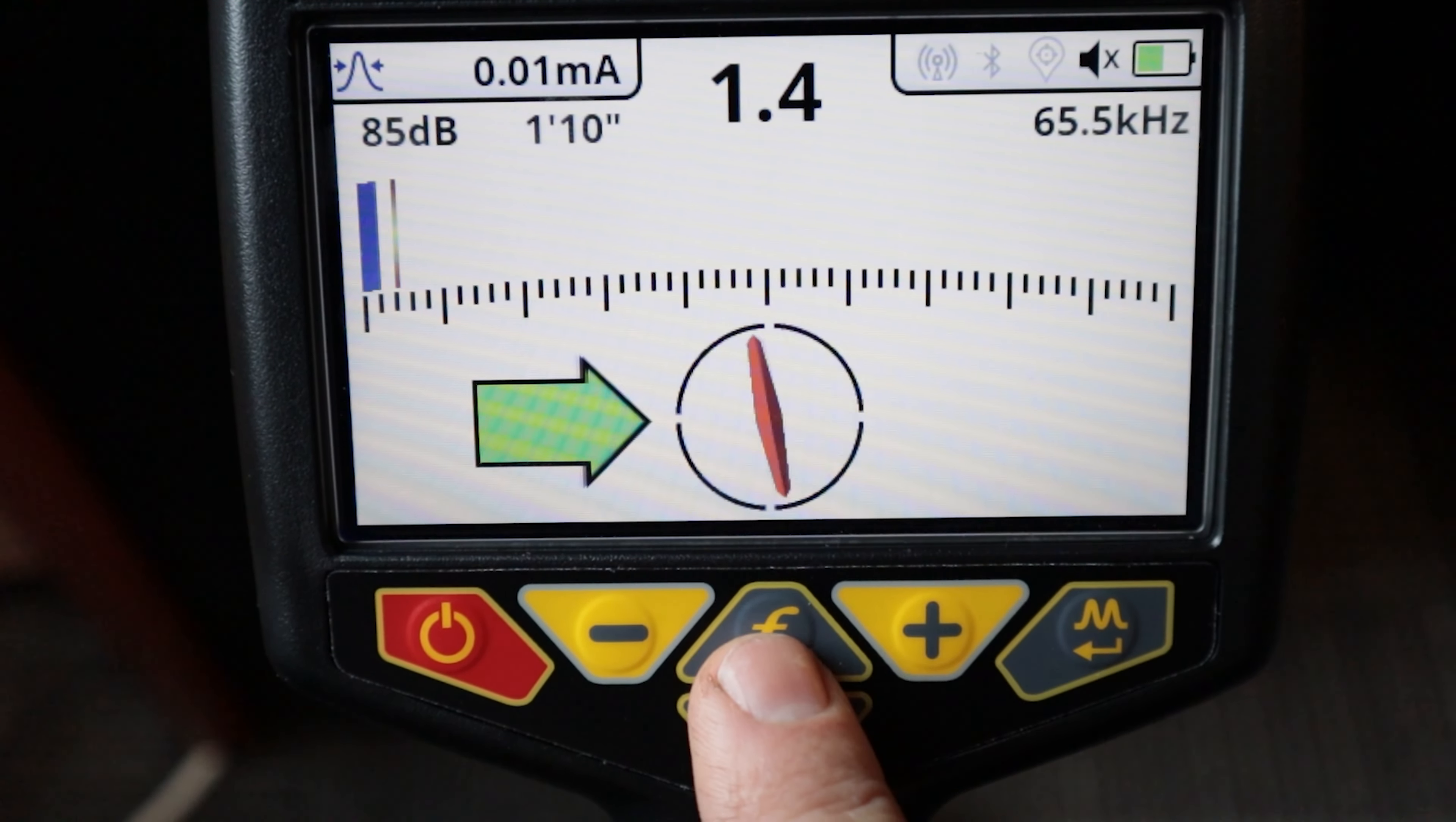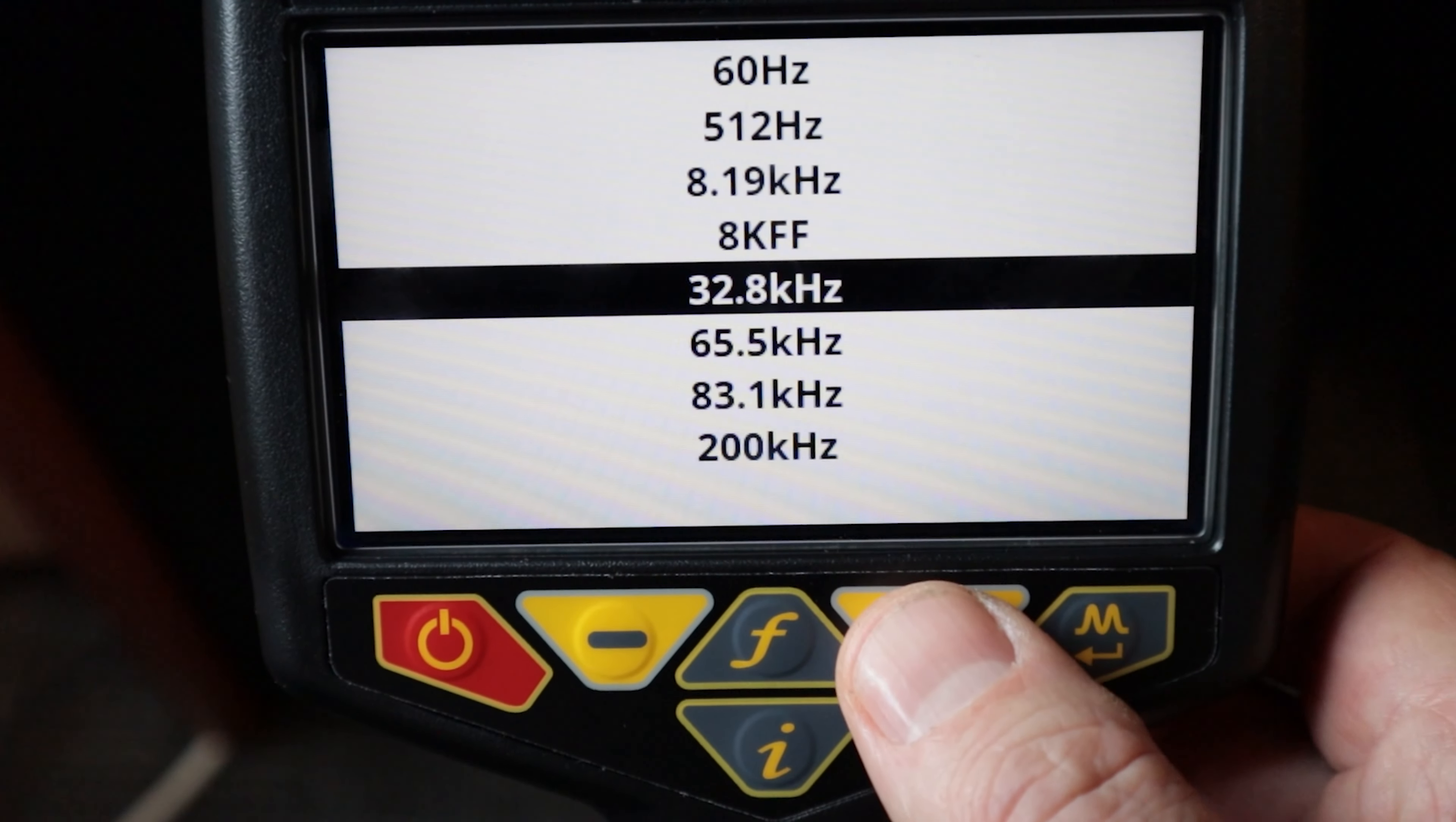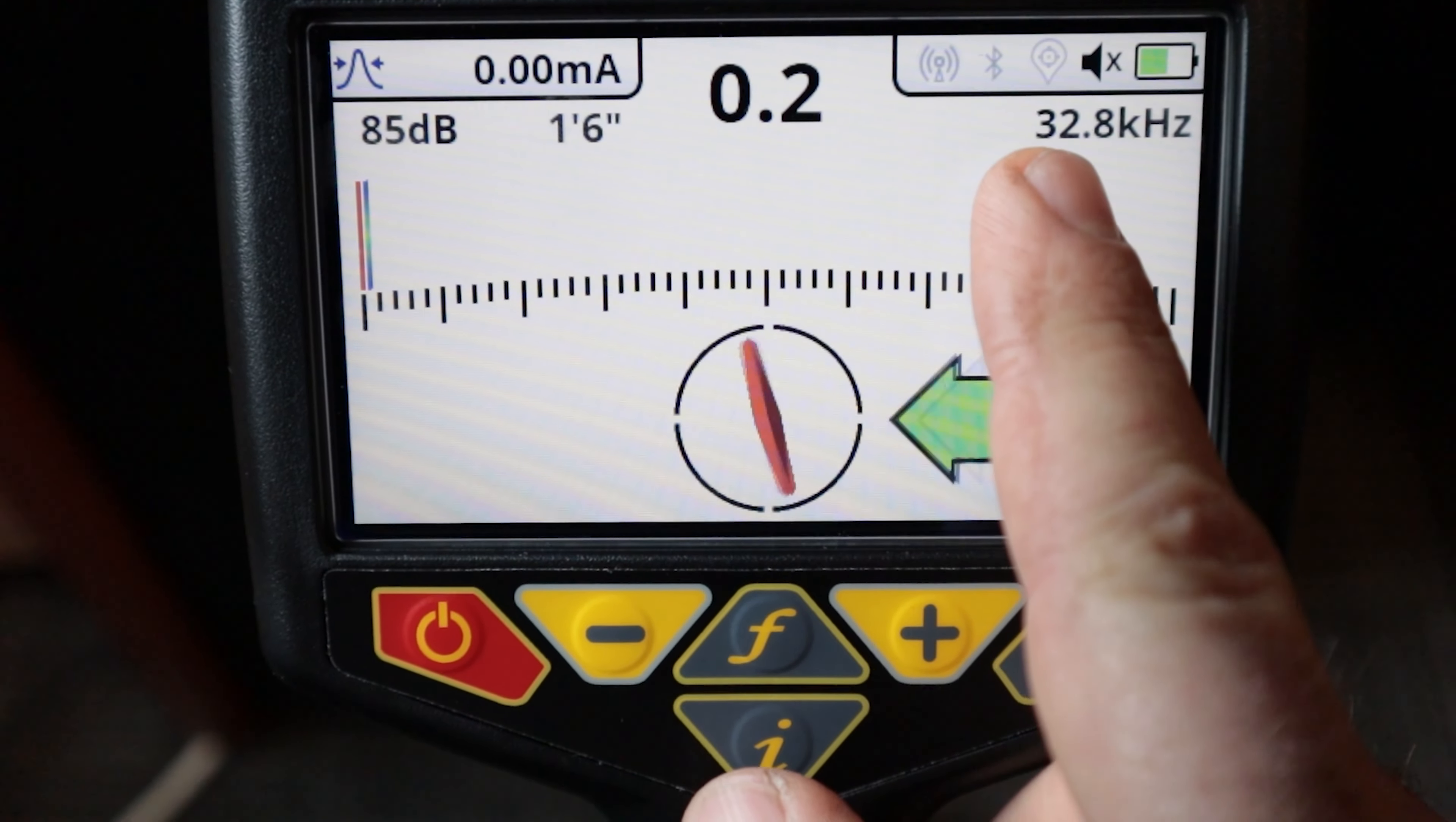In the center here is our F button which is our frequency button, so you'll see up here as I push that F button my frequency changes. I can also push and hold on that F button if you're like me, someone who clicks that F button too many times and constantly goes past the frequency that you want. You can push and hold the F button, get into this frequency screen and there I can actually scroll through and pick the frequency that I want to locate in. Push the enter button and now we're in 32.8.